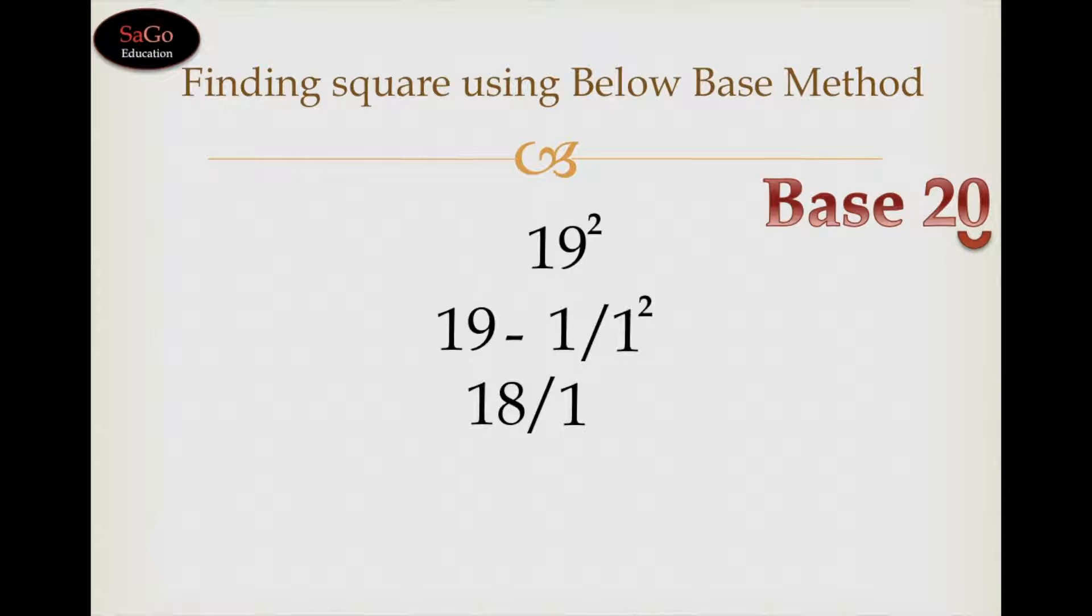There is only one zero in the base 20, and 1 squared has come 1 only, which is a single digit. So we can write down 1 directly as it is.